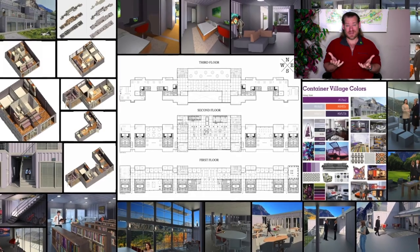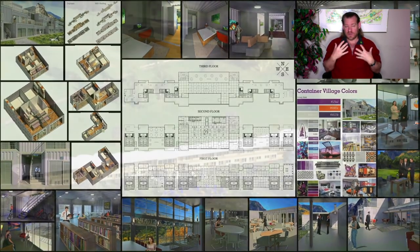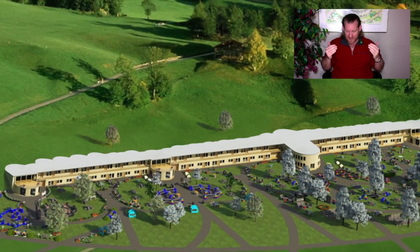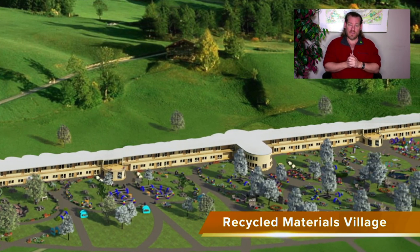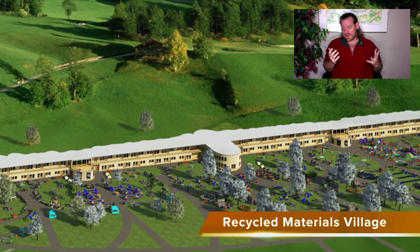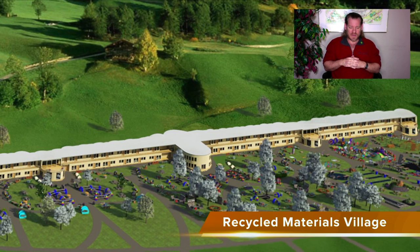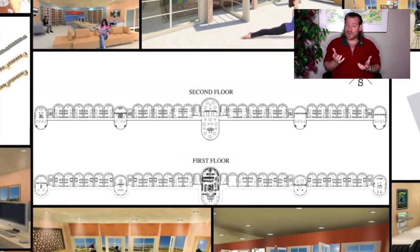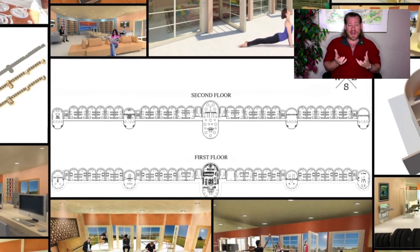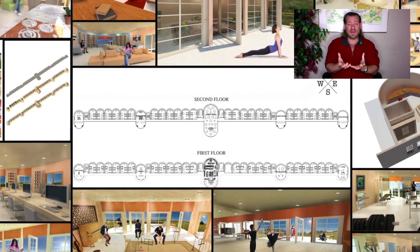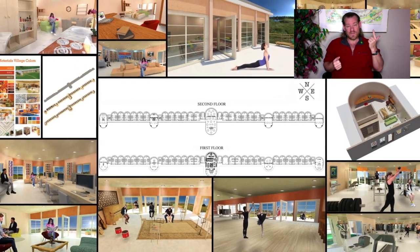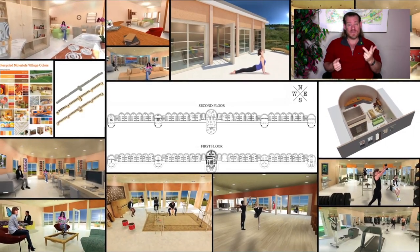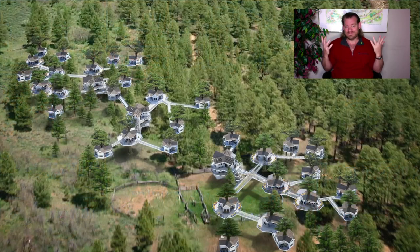We have the resources and the technology right now to create a world that works for everybody. It is physically possible. So what is in the way? We think it's politics, differences in values, people believing it's not possible, and lack of a working example to show people what is possible. Creating a working model that sparks a grassroots movement — making it easy enough, affordable enough, and attractive enough for the idea to spread on its own — that's what we're creating.